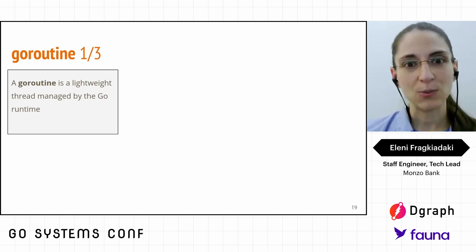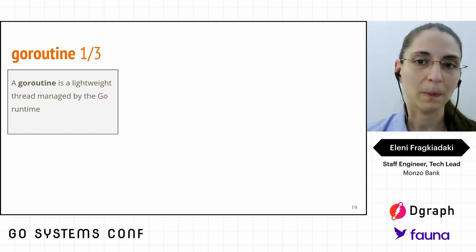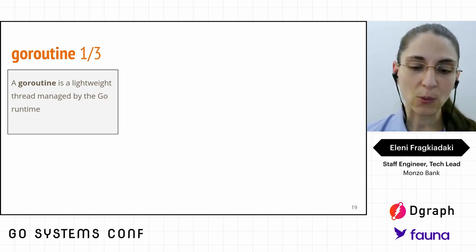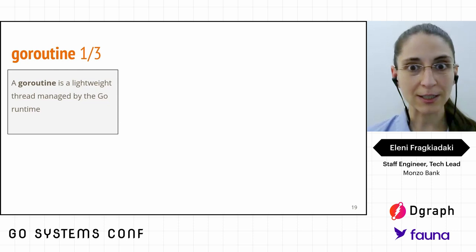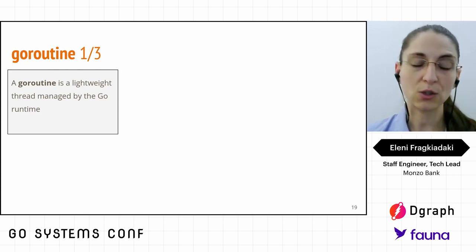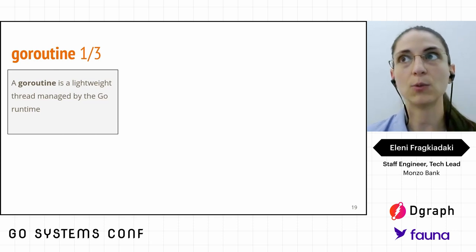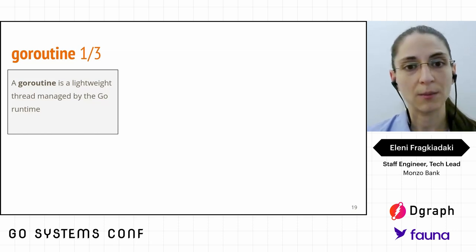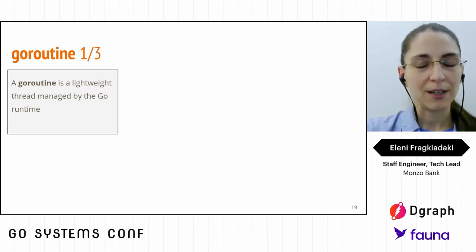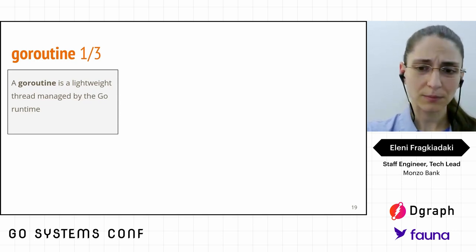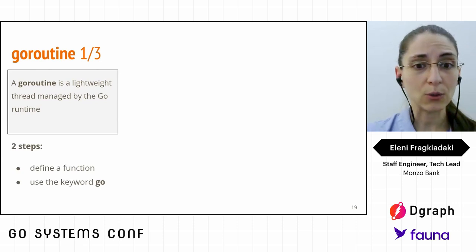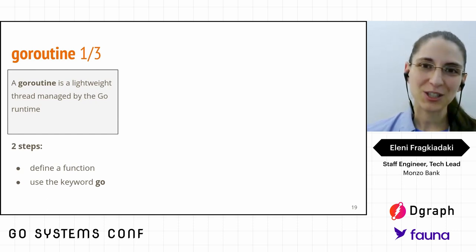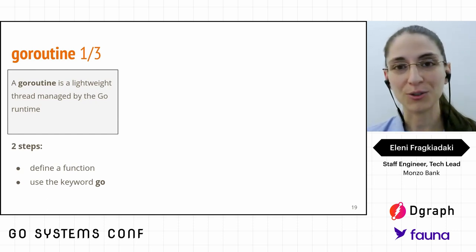Now let's talk about goroutines. A goroutine is a lightweight thread managed by the Go runtime. The Go runtime maps operating system threads to what Go can actually use, and is responsible for scheduling goroutines onto threads. Usually we have more goroutines than threads. They are called lightweight because they are very easy to write and implement — we just need to define a function and prefix the call with the keyword `go`, which creates a goroutine for us.